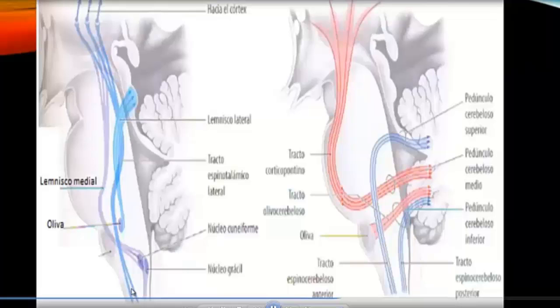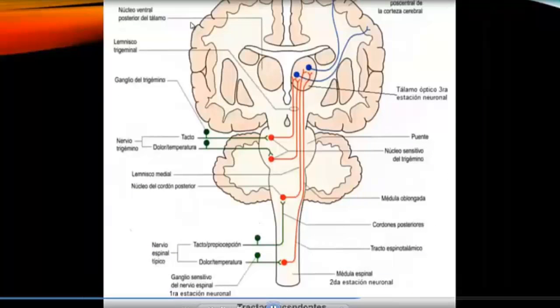Here we see how the tracts unite at the level of the brain stem to form true ribbons or lemnisci that will go to the optic thalamus, and from the optic thalamus toward the parietal cortex where it is analyzed, captured, and codified.